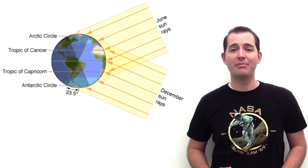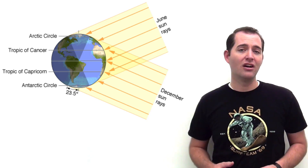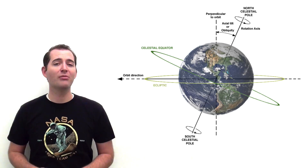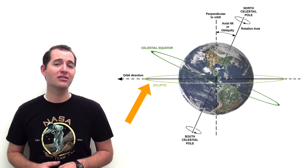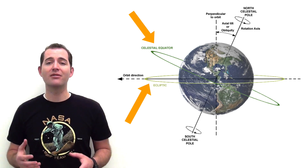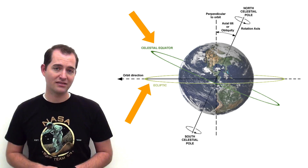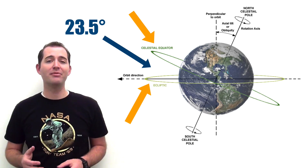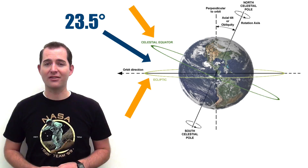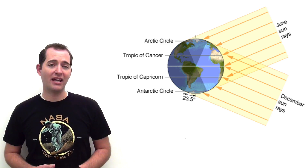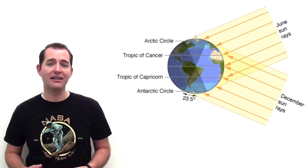These four lines — the Arctic Circle, the Tropic of Cancer, the Tropic of Capricorn, and the Antarctic Circle — are all largely impacted by the axis tilt of the earth. The axis tilt of the earth is determined by the ecliptic, which is the plane of the earth's orbit around the sun, and the equatorial plane, which is the plane that extends perpendicular from the rotational axis of the earth. The difference between these two planes, the ecliptic and the equatorial plane, is approximately 23.5 degrees, which is the axis tilt of the earth. This axis tilt determines the locations of the Arctic Circle, the Tropic of Cancer, the Tropic of Capricorn, and the Antarctic Circle.